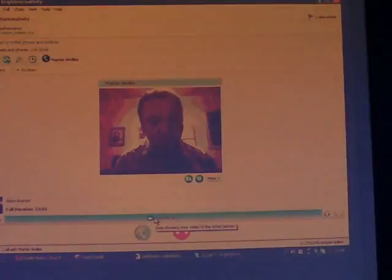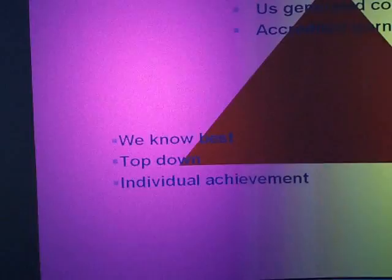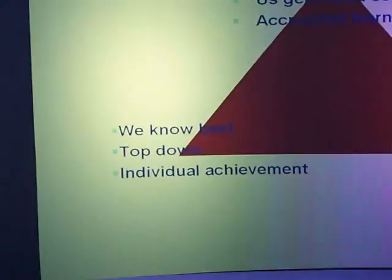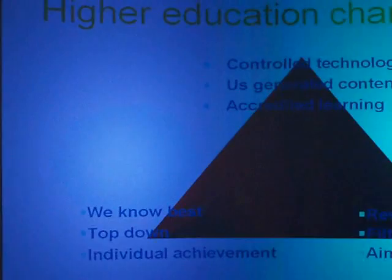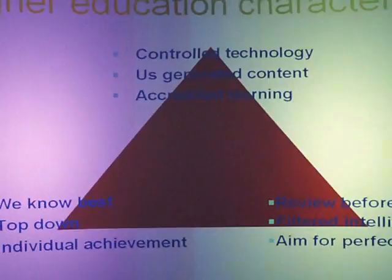We aim for perfection before releasing anything. And over on the bottom left, you've got arguably the idea that we — the academics — know best. That's why you come to us to be taught. It's a very top-down process, coming from professors and experts down to students. And it's all based around individual achievement rather than social achievement. Those are the characteristics that embody this kind of clash between these two fields.